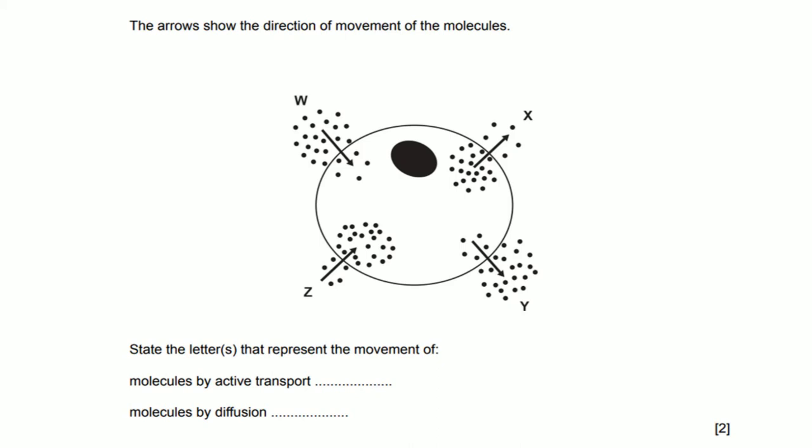The diagram shows the movement of molecules inside and outside of the cell. The question says state the letters that represent the movement of active transport and diffusion. First of all we can quickly write down that active transport is from a low concentrated area to high concentrated area and diffusion is from high to low.